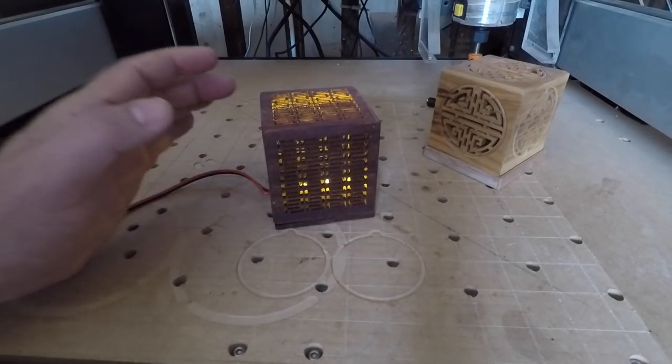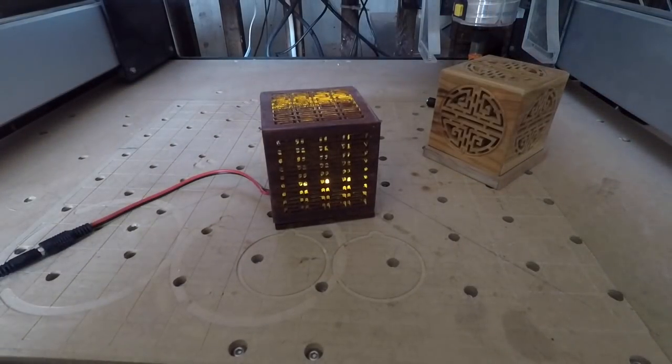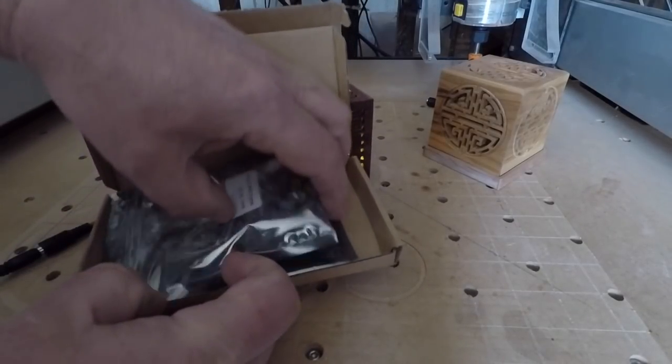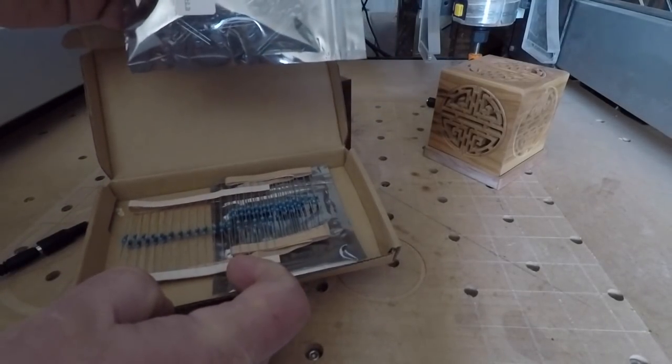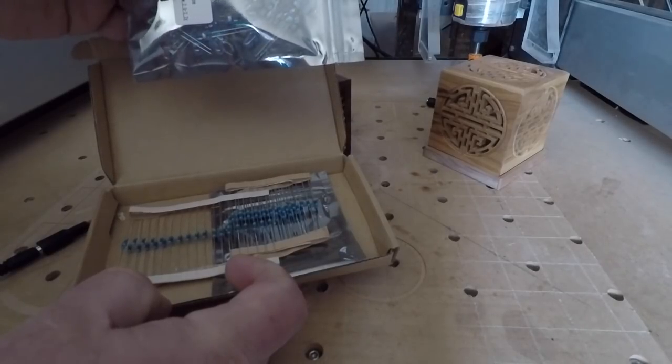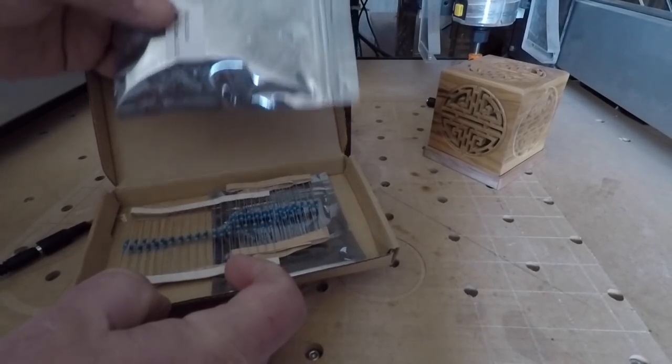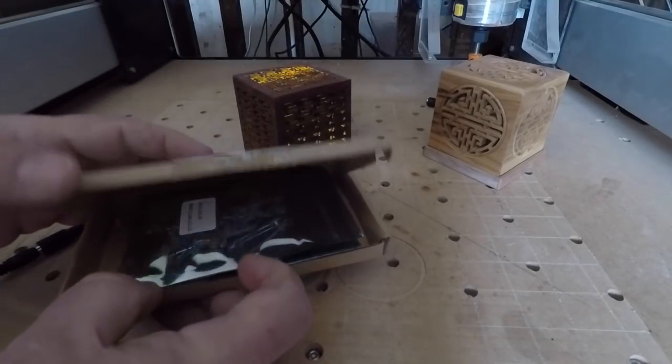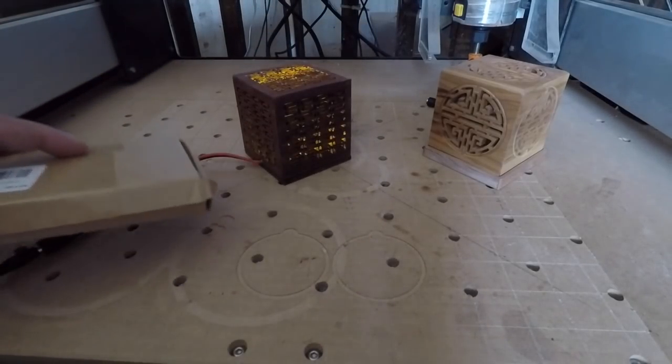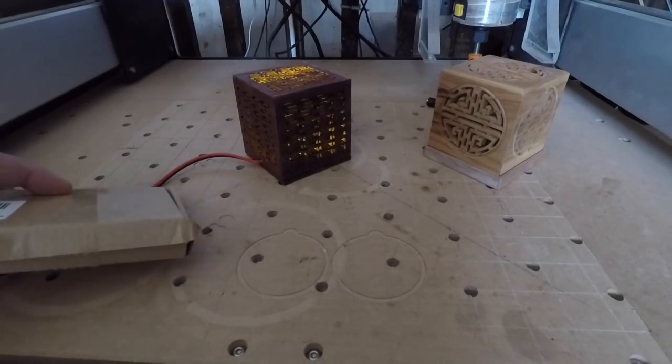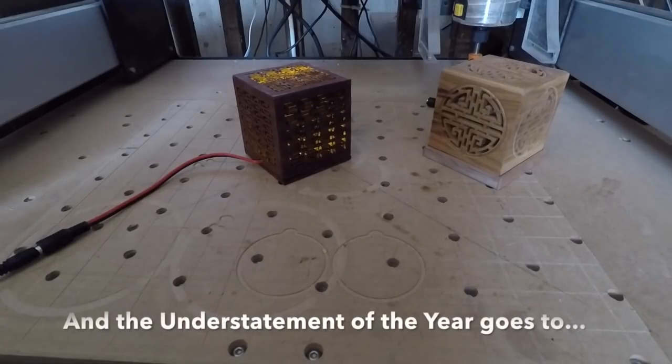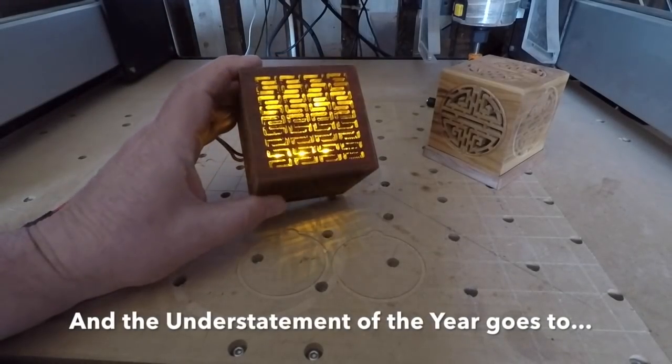Now these come in packages of like a hundred of these along with the resistors that you'll need and they're extremely easy to go ahead and solder together. The resistor goes on the hot lead and then you just run them in parallel. I'm not a great person at soldering but if I can do these you can.